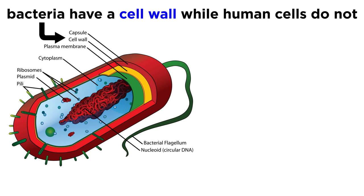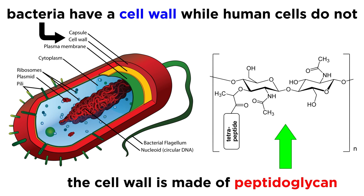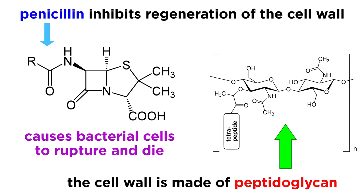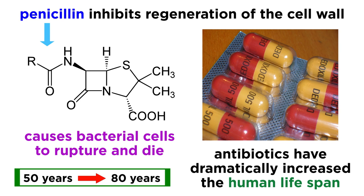Many of these operate on the basis of a difference between bacterial cell structure and human cell structure. Bacterial cells possess a cell wall made of a substance called peptidoglycan, which human cells do not possess. The first antibiotic ever discovered, penicillin, inhibits a bacterial enzyme that is used to regenerate the cell wall, so in the presence of the drug, the cell wall of bacterial cells will rupture, spilling their contents and thus killing the bacteria. Antibiotics like penicillin and others that followed have almost single-handedly doubled the human lifespan.